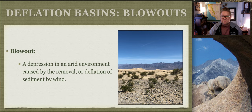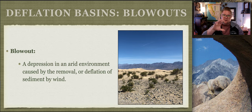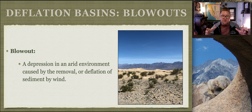A blowout is a depression in an arid environment caused by the removal and deflation of sediment. These are the sand dunes down in Death Valley - very large areas, miles wide, with big blowout areas between sand dunes where all the sand has been removed. But dunes are in constant motion, so in six months this area will probably be covered in sand. The sand migrates and changes the location of the blowout, which is usually spherical.